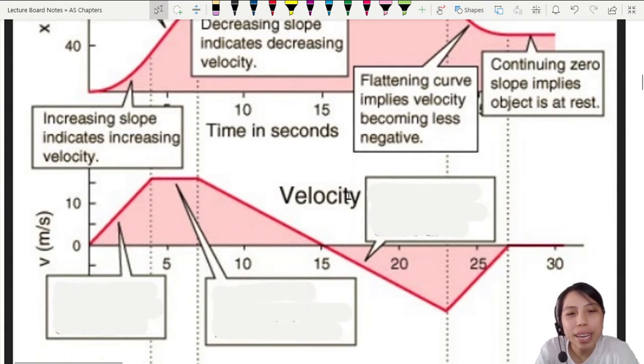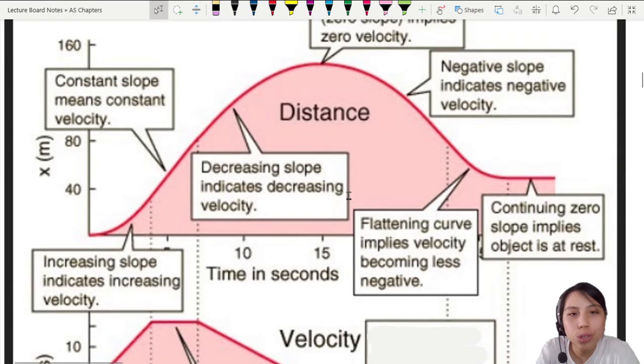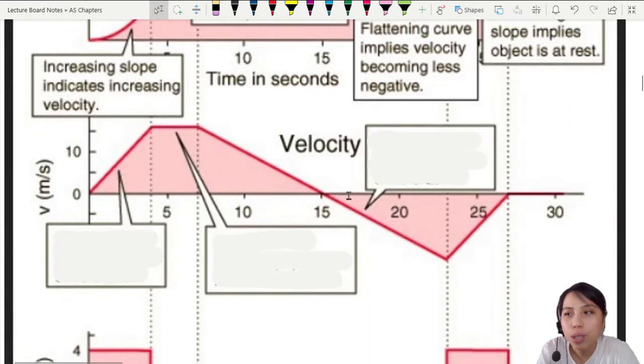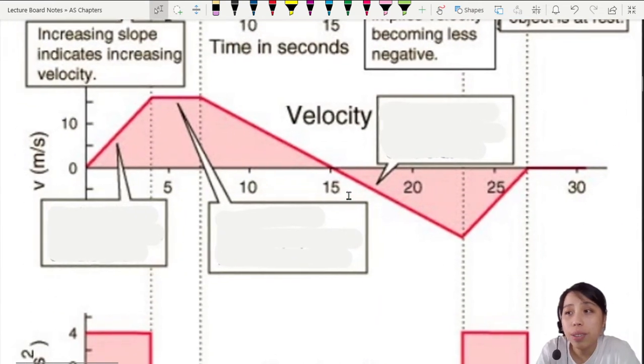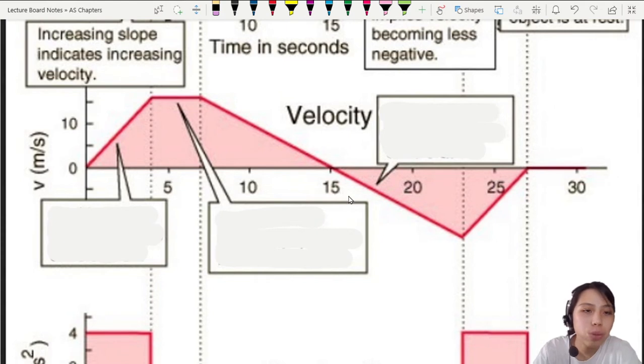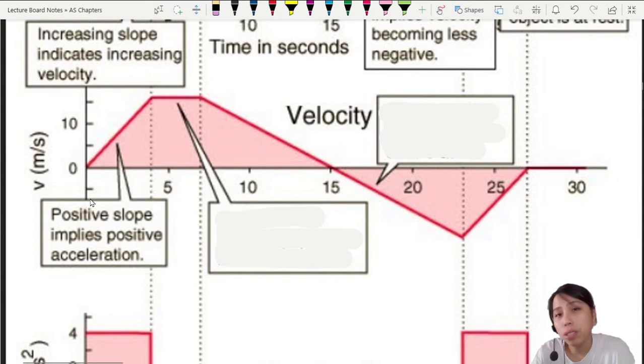The same thing applies for velocity graphs as well. When you translate from distance to velocity, you can read acceleration from velocity graphs. Beginning part, you see? Increase at constant rate. How do we describe that? Positive acceleration, constant acceleration.